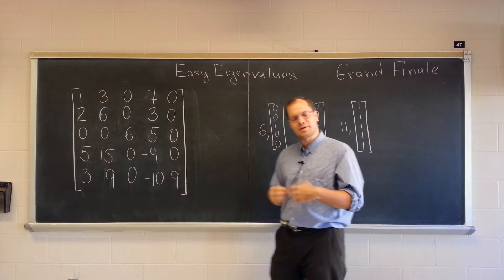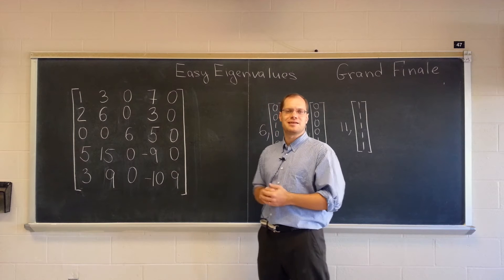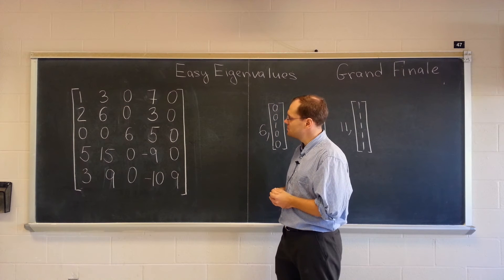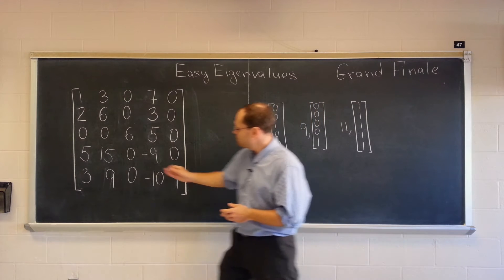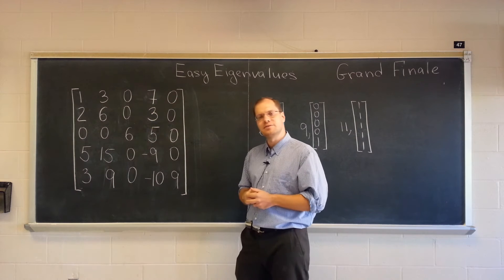Now we only need one more. Once we have one more, the trace will tell us the remaining one. Can you see one more? Well, I put it in the first two columns. I made the first two columns linearly dependent.